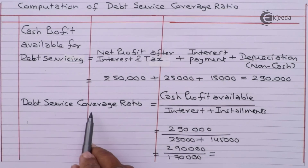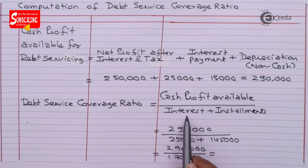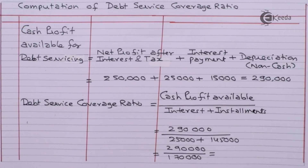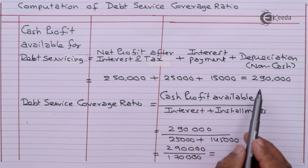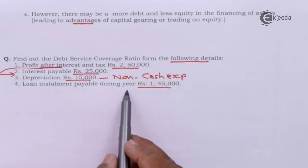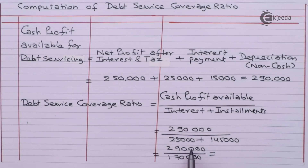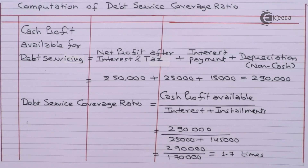Debt service coverage ratio = cash profit available divided by interest plus installment of loan, where installment means the part of principal amount. Cash profit available: 2,90,000. Interest payable: 25,000. Loan installment payable during the year: 1,45,000. So: 2,90,000 divided by (25,000 + 1,45,000) = 2,90,000 divided by 1,70,000 = 1.7 times.